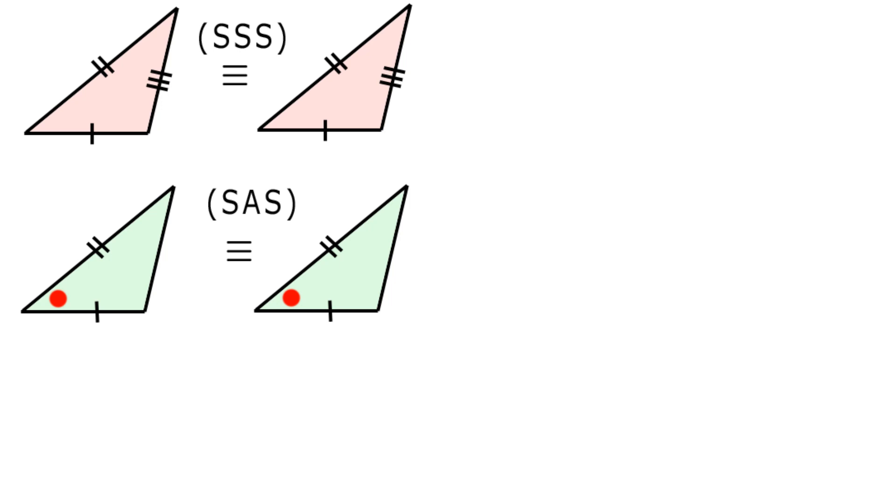Condition 3: ASA. Two angles and one side are the same. Two angles in the first triangle are equal to two angles in the second triangle, and the side included by the angles is also equal.